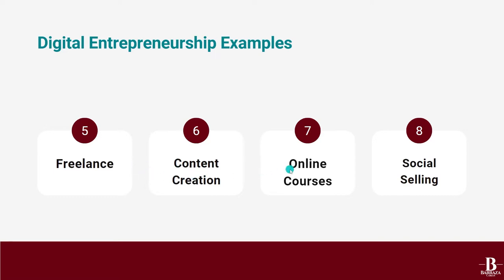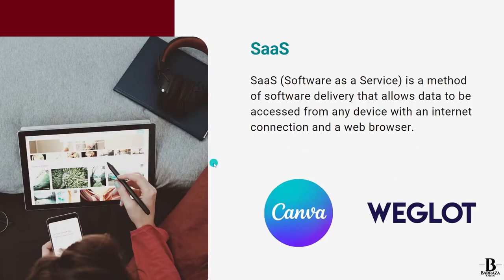Starting with software as a service — we have seen the rise of plenty of software apps and web apps. For example, this presentation was done with Canva, a software as a service that helps non-designers create better designs for social media posts, presentations, videos, and many more creative assets. Canva is one of the most popular SaaS products available, and there are many other businesses being created thanks to cloud technologies that can be easily scaled.